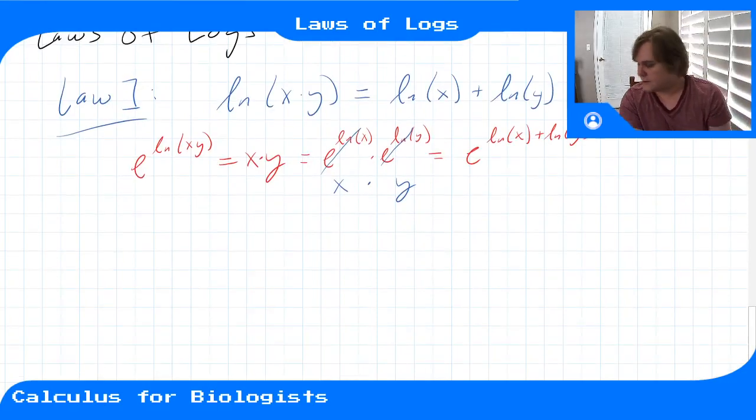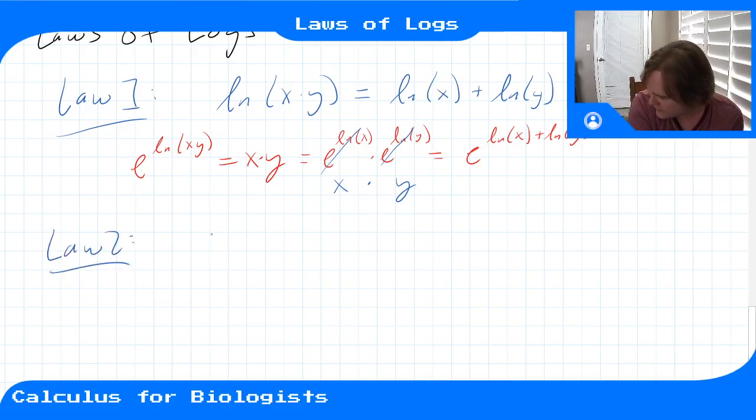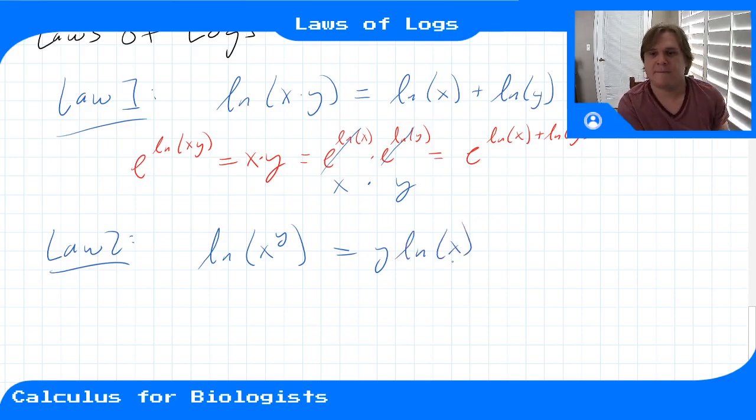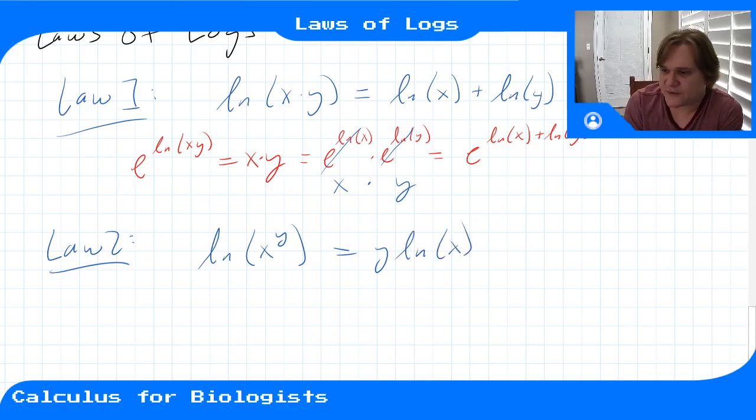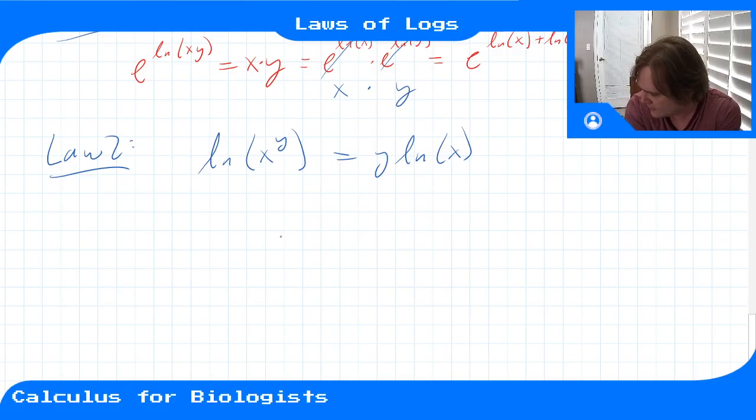Okay, and the other laws are going to come from similar places, but I won't prove them. Okay, so law number 2 says that if I have ln(x^y), well, this is the same thing as y times ln(x). Okay, and that comes from kind of doing the same sort of thing, applying the exponential of both sides and seeing that it's coming from a law of exponents.